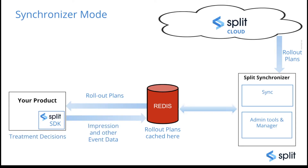Once get treatment is called, an impression is generated and stored in Redis. Also, if the track call is used, you will have event data. The synchronizer runs a thread every X amount of minutes, scans Redis to check for any impressions and events that have not been sent, and flushes them to Split cloud.